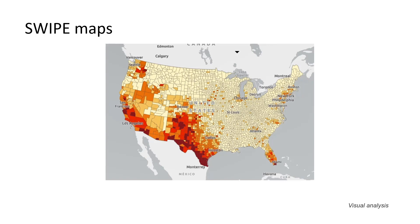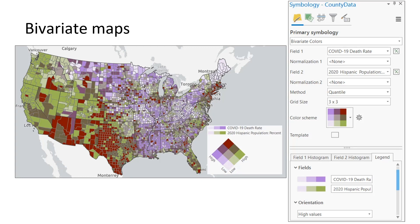Let's create a bivariate map. Bivariate maps classify both variables into high, medium, and low categories, then map every combination. Notice the legend — let's focus on the corners. Counties with high death rates and high percentages of Hispanic populations stand out as the darkest color. The green areas are high for Hispanic population percentages but low for COVID death rates. The white areas are low for both death rates and Hispanic percentages. The purple areas are high for death rates but low for Hispanic percentages.